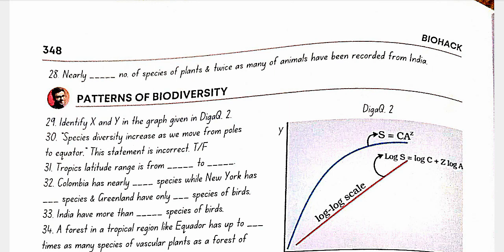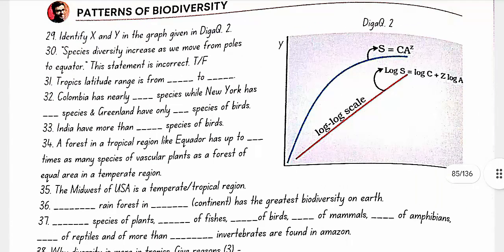Latitudes of Biodiversity: In Diagram 2, X is area and Y is species richness. Species diversity increases as we move from the Poles to the Equator — that statement is correct. The tropical latitude range is from 23.5° North to 23.5° South.